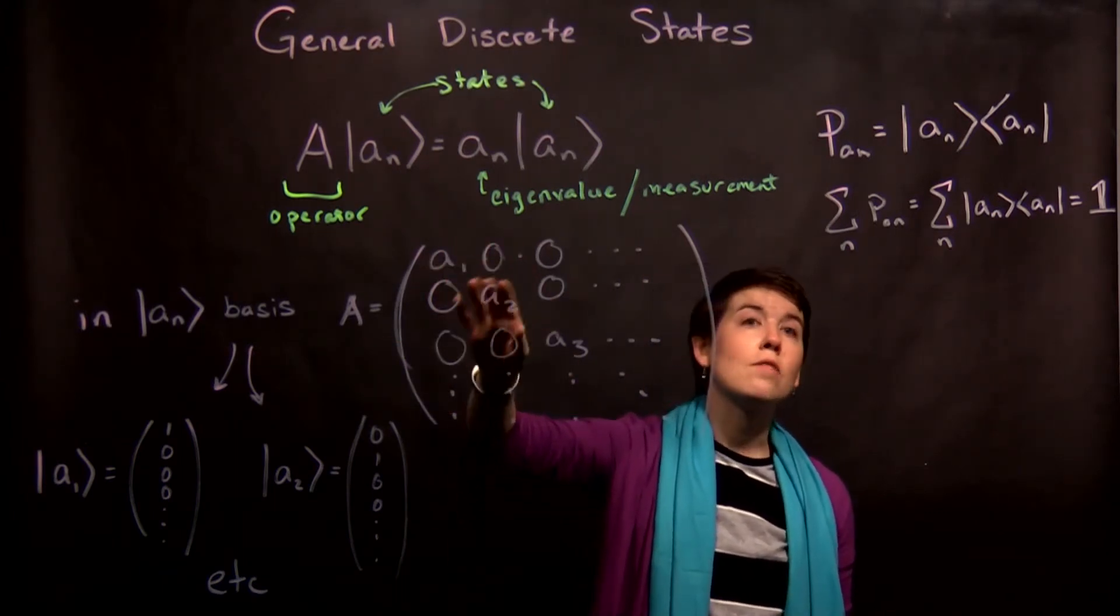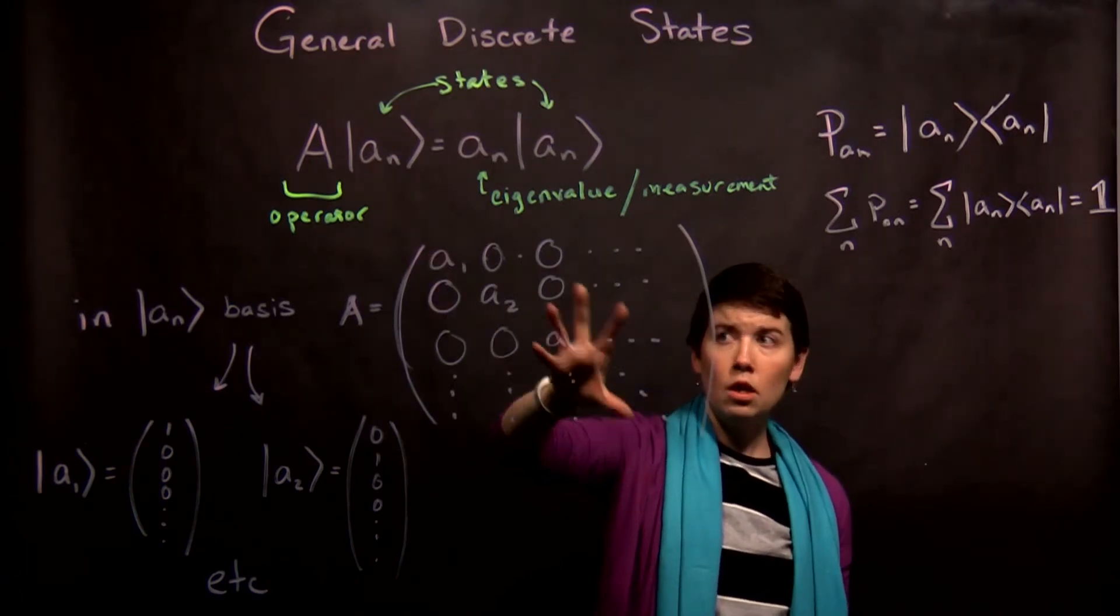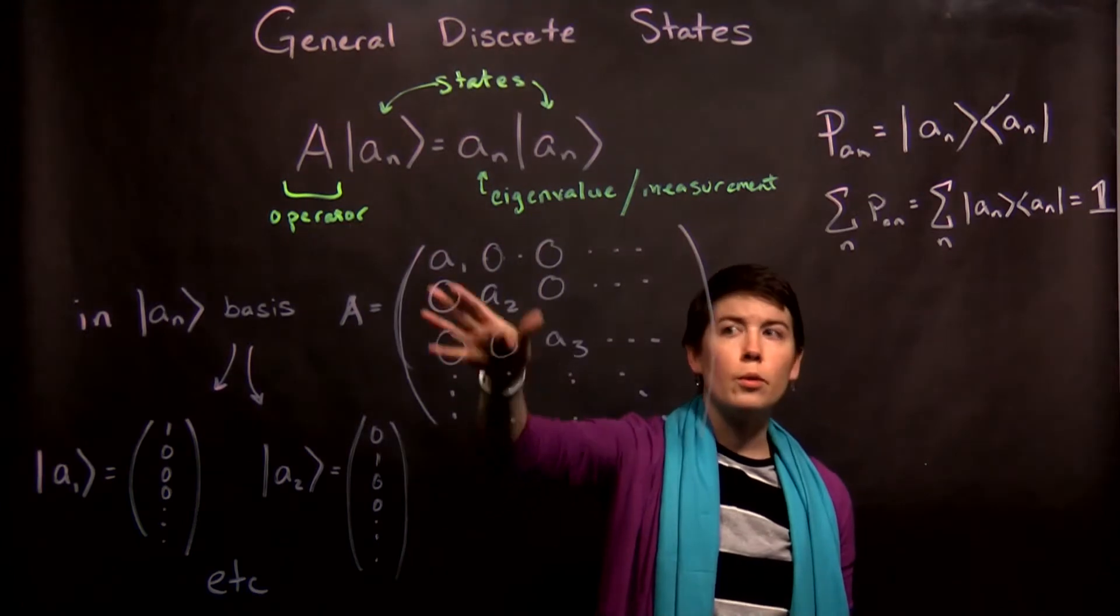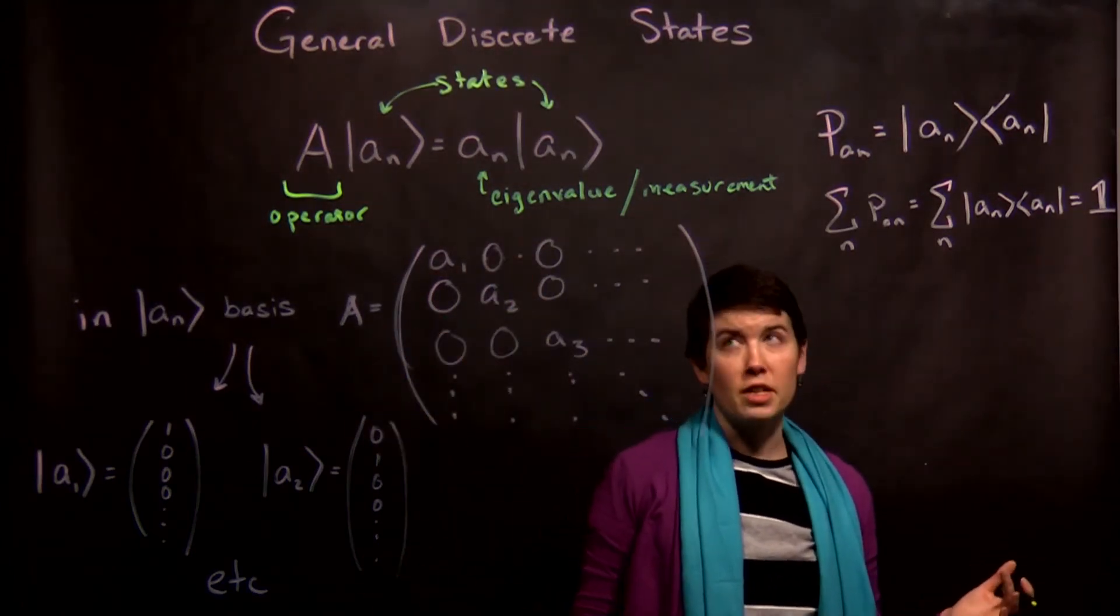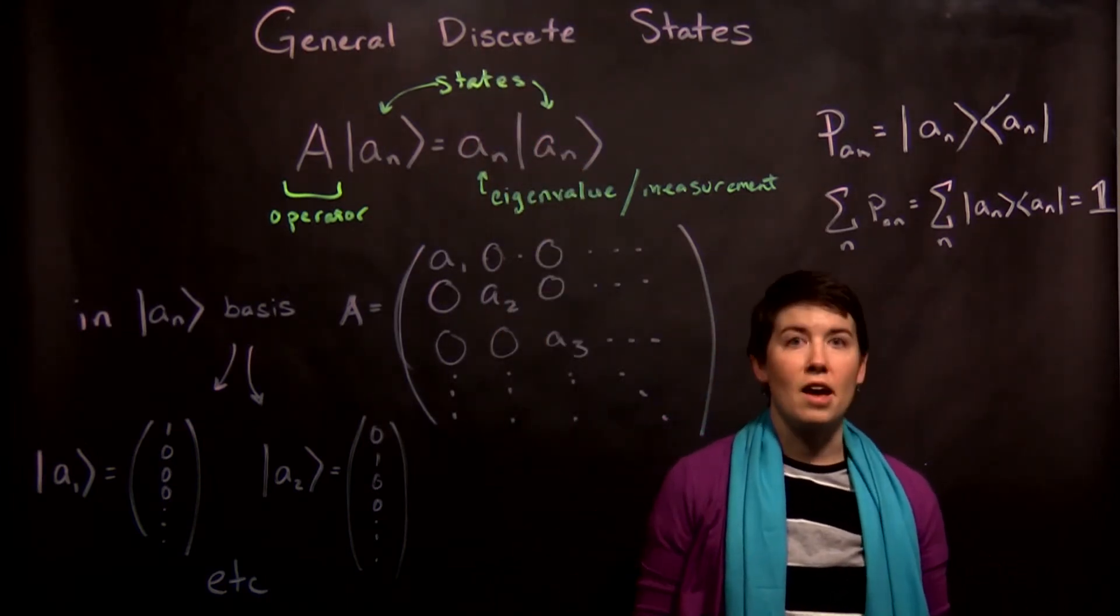So when it is diagonal, your eigenvalues lie along the diagonal of this matrix, and all of your other entries are zero. And we represent it this way, showing that this can be a very, very large matrix. But as long as it's a discrete system, it can be expressed as a matrix.